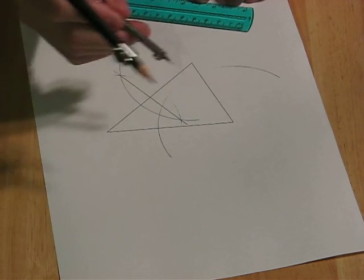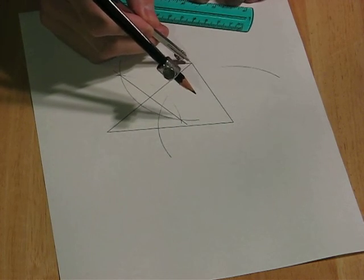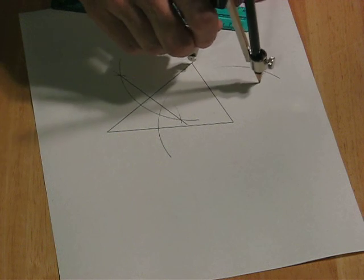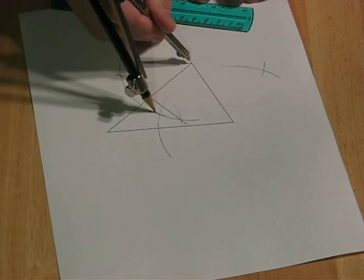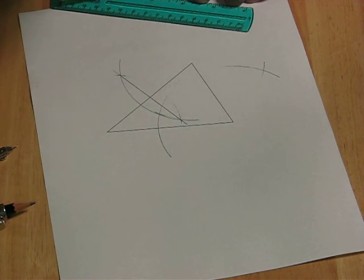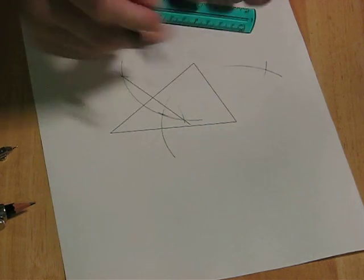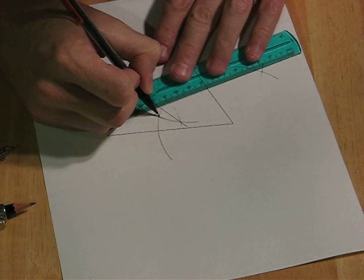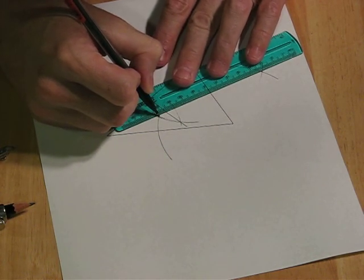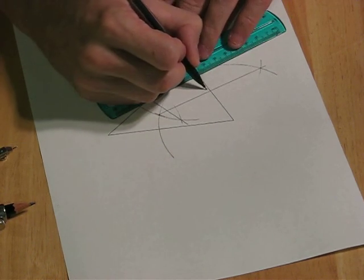Then keeping the radius of the compass the same, put it here and find that point and that one. So those two arcs intersect right there and that point. Those points will give me perpendicular bisector of this side.